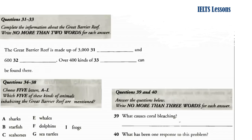Now listen carefully and answer questions 31 to 33. Despite its name, the Great Barrier Reef isn't just one large coral reef. Rather, it's a system of coral reefs that stretches along the east coast of Australia, covering an area of around 300,000 square kilometres. The Great Barrier Reef is composed of approximately 3,000 individual reefs, which range in size from one hectare to more than 10,000 hectares each. In addition, around 600 islands are scattered throughout the area, particularly at the northern and southern ends. The reefs themselves are composed of over 400 different kinds of coral, the largest variety of corals found anywhere in the world.